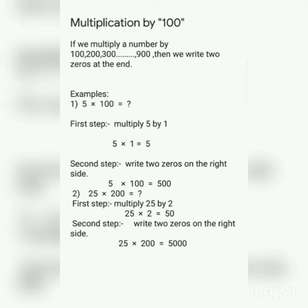Example number 2: 25 multiplied by 200. In the first step we multiply 25 by 2 and get the answer 50. In the second step we write two zeros on the right side of 50 and get the answer 5000.